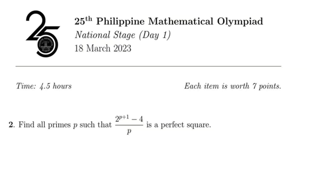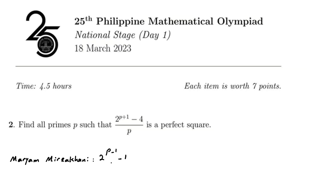This is the second problem of PMO, the 25th National Stage, Day One, 2023. This problem is similar to a problem in a book by Mirza Honey — I think from around 15 to 20 years ago. The problem is exactly similar and the solution idea is also similar. The problem is: (2^p - 1 - 1) / p is a perfect square and p is an odd prime.